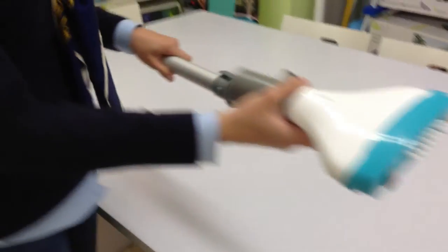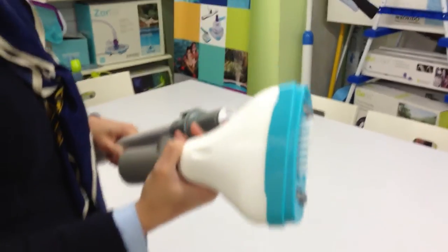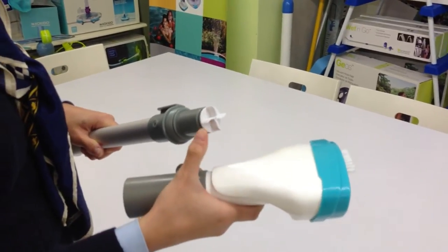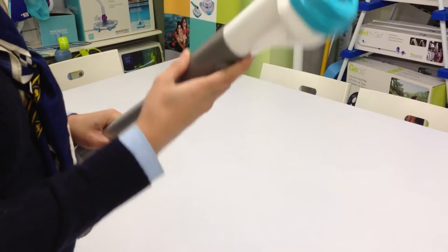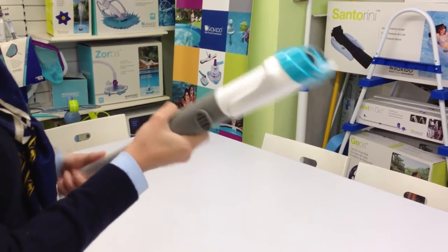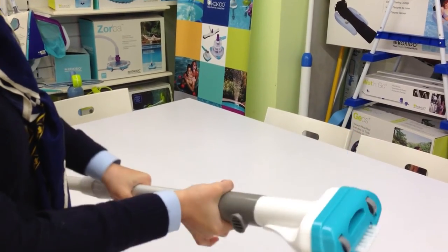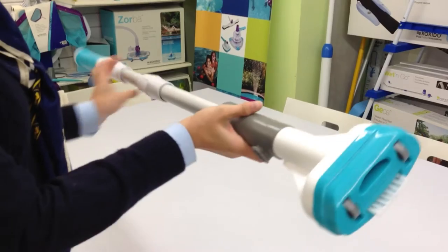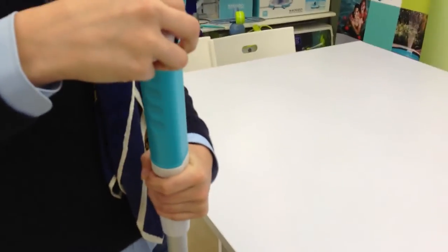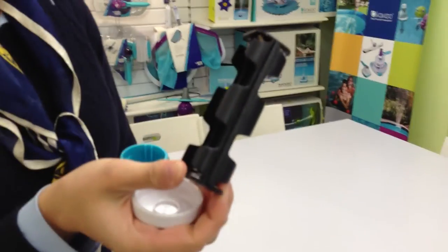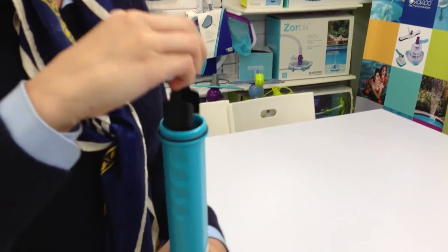After you screw on the top head to the main body, this is the propeller that attracts the water into the main body. Once you've screwed in the head, you can open your battery compartment and add 8 fresh AA batteries here, and you can put it back in.